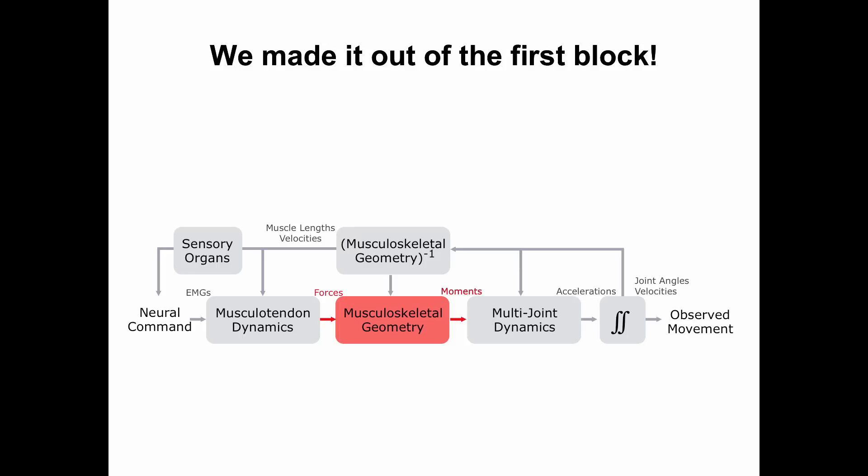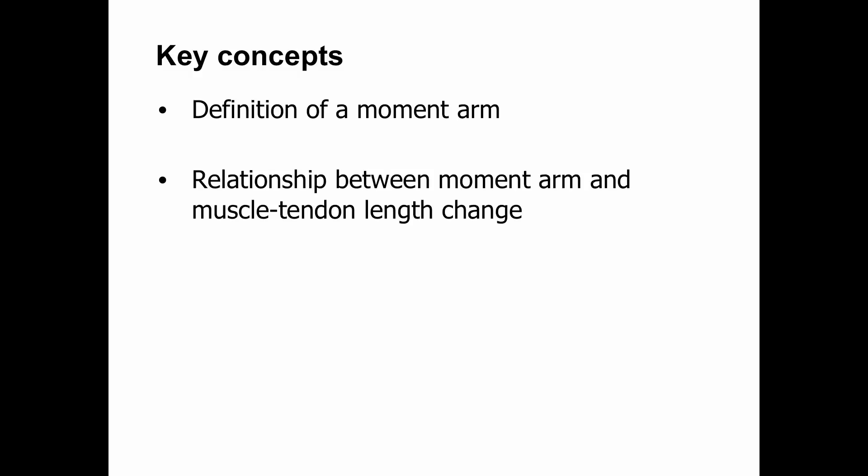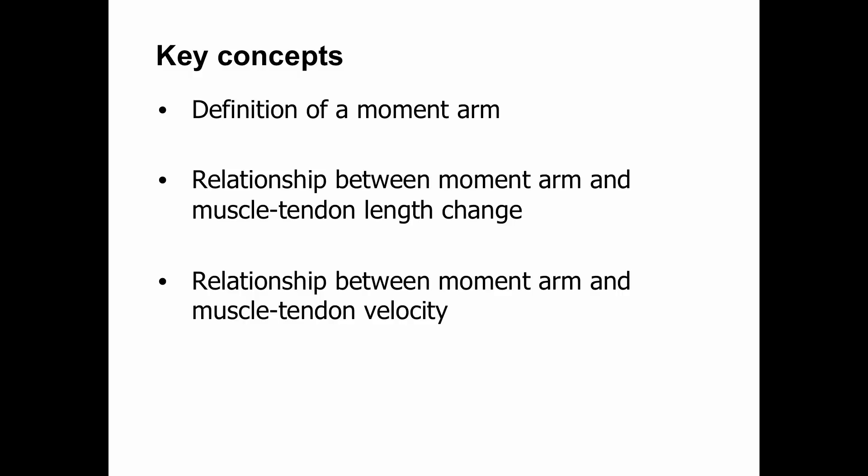So the main topics of today are as follows. We're going to define what we call a moment arm, which we've alluded to a couple of times in the class already. Then we're going to talk about the relationship between moment arm and muscle-tendon length change, which ends up being critical. We'll also talk about the influence of moment arm on velocity, and then we'll sum up to look at what this looks like at the whole joint level.